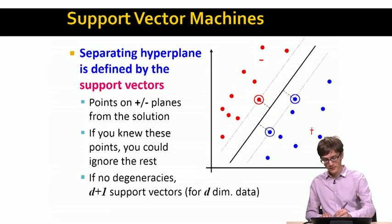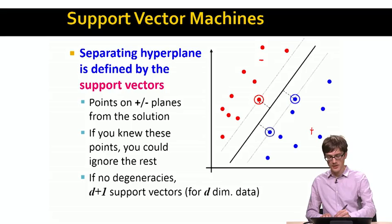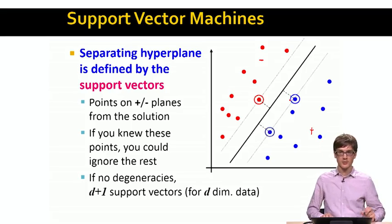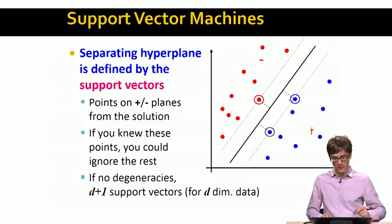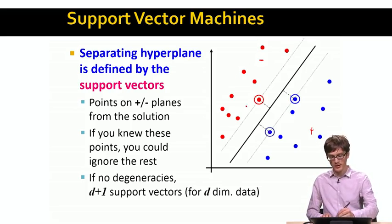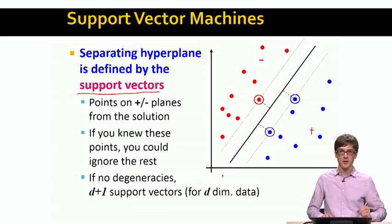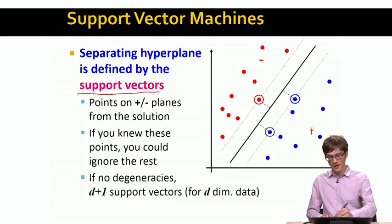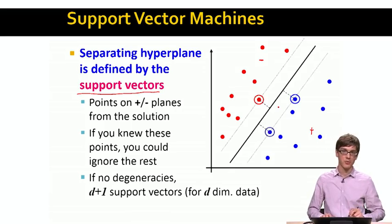And the way this line is simply defined, it's defined by a few points that are closest to it. What this means is that we could ignore all other data points if we would have these three circle data points because they already uniquely define the line. And these three circle data points, they are called support vectors. The line, the separating hyperplane, is uniquely defined, in this case, by three supporting support vectors.